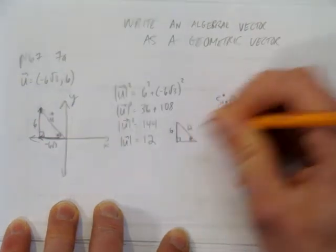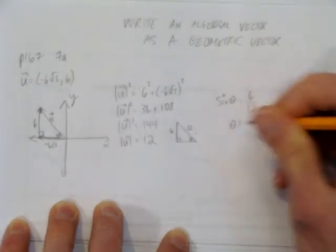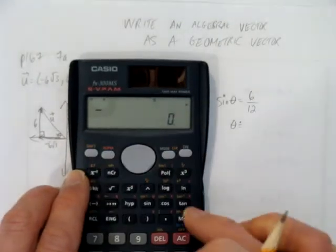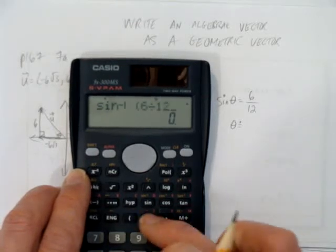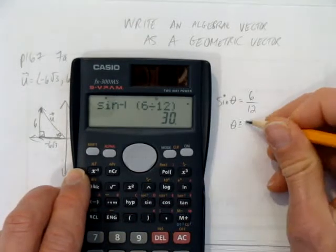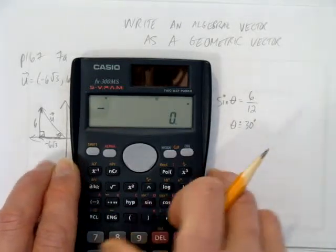The sine of theta is just 6 opposite over the hypotenuse 12. So solve for theta by going on your calculator and taking the inverse sine of 6 divided by 12, which is 0.5. And you get 30 degrees. No surprise there, it's right out of the special triangles.